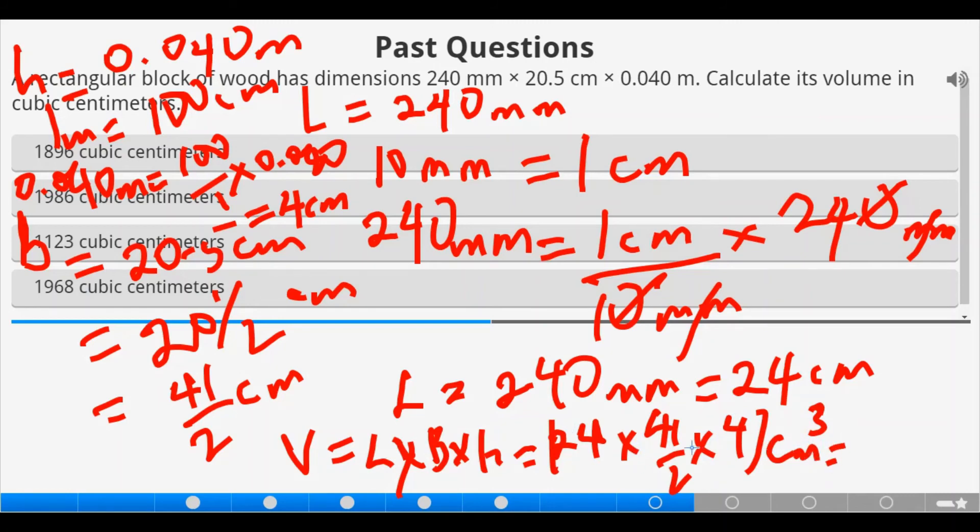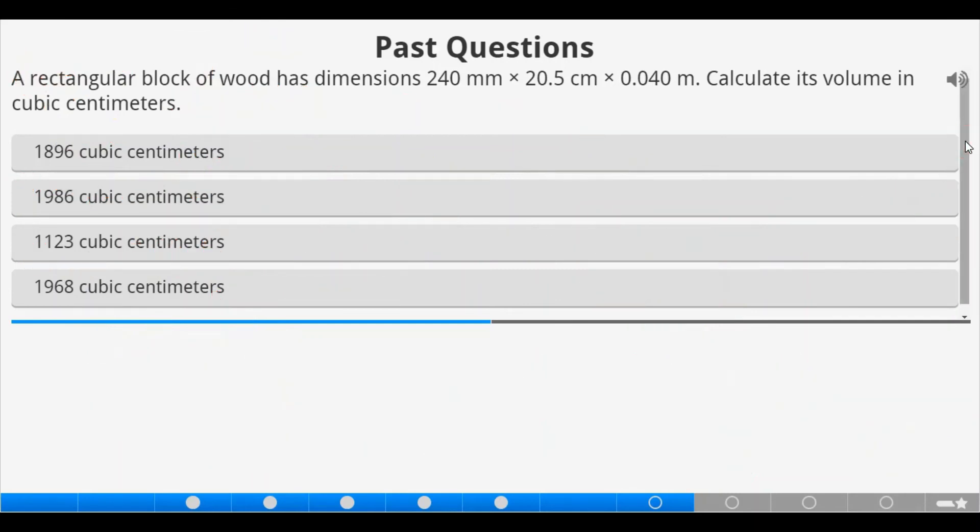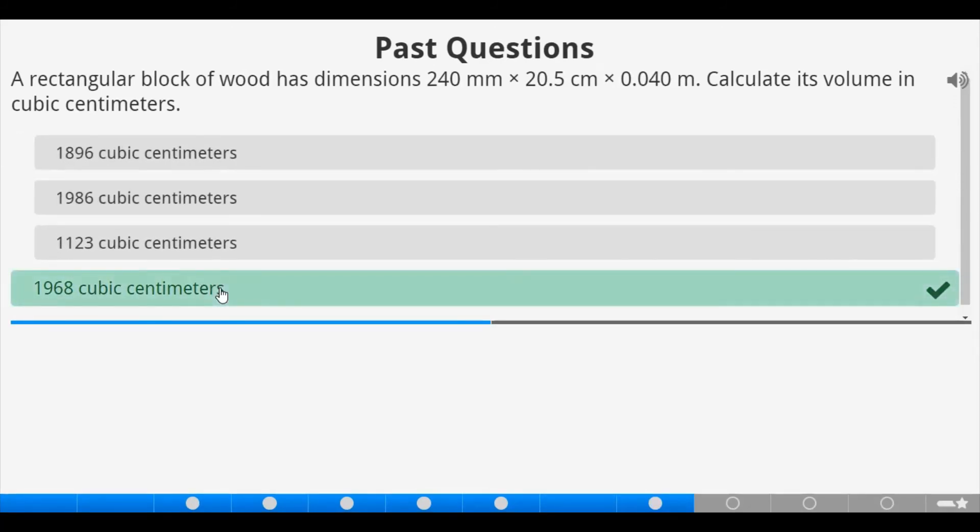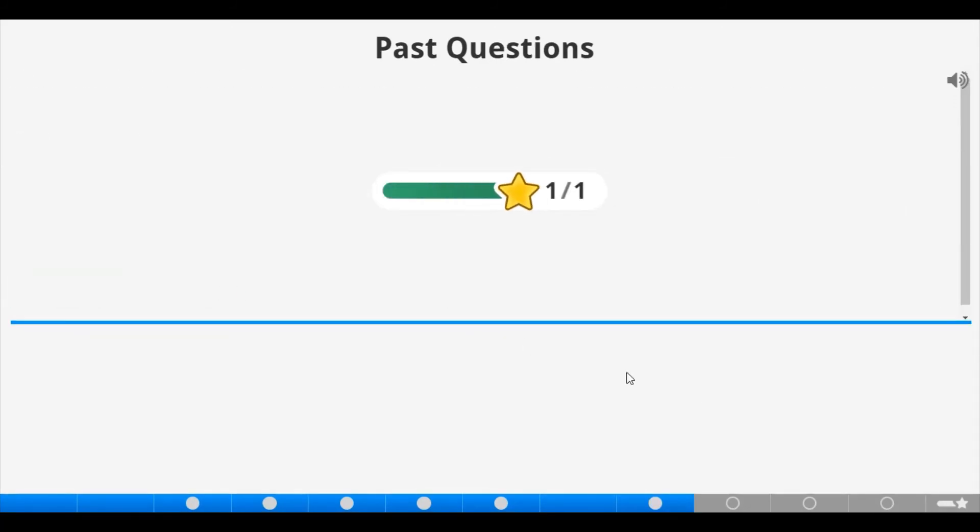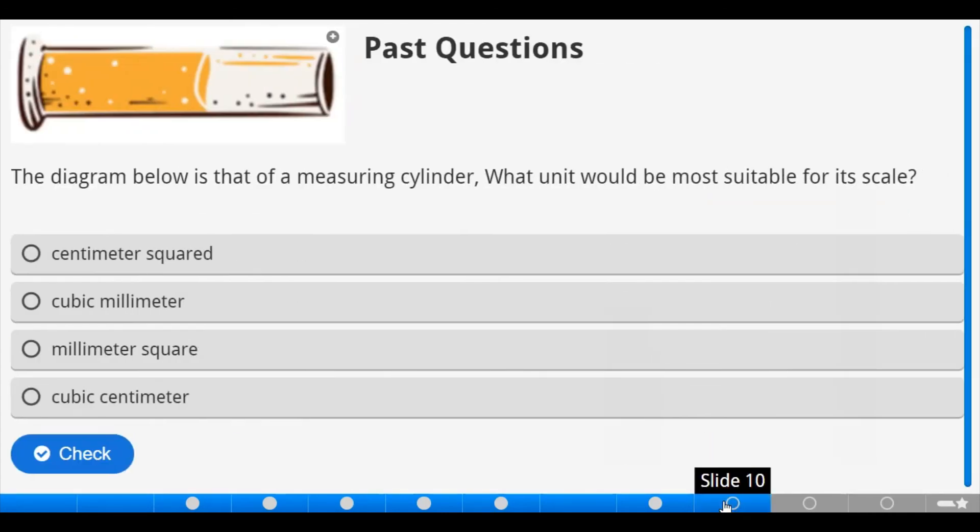The value of the answer now, 24 times 2 is 48. 48 times 41 gives 1,968 cubic centimeters. So, is that part of the option? 1,968 cubic centimeters. Yes. So, let's check. That's correct. As you can see. Let's proceed.